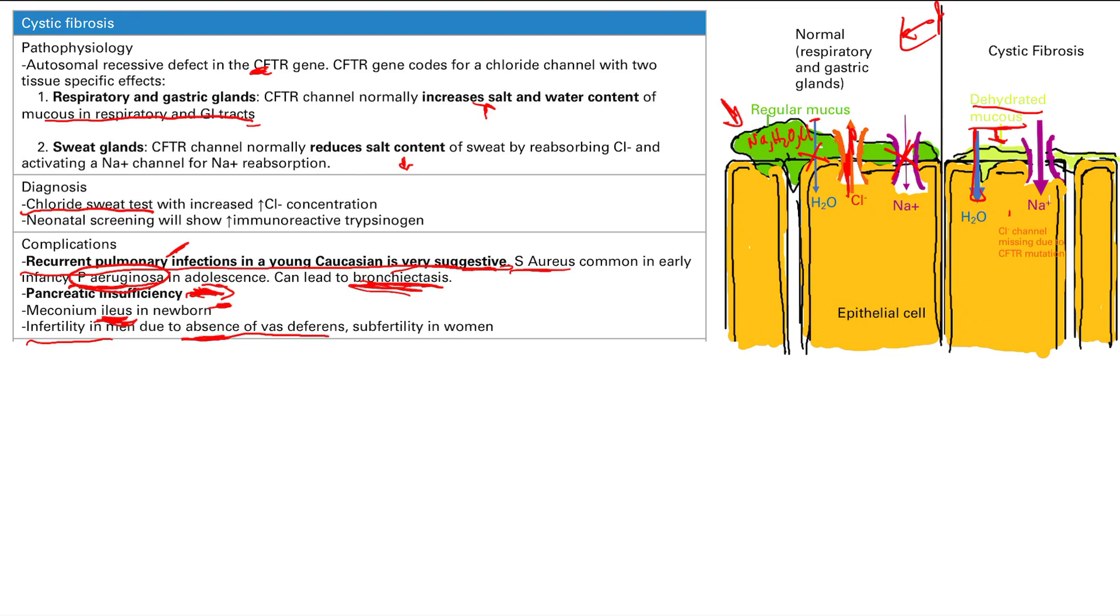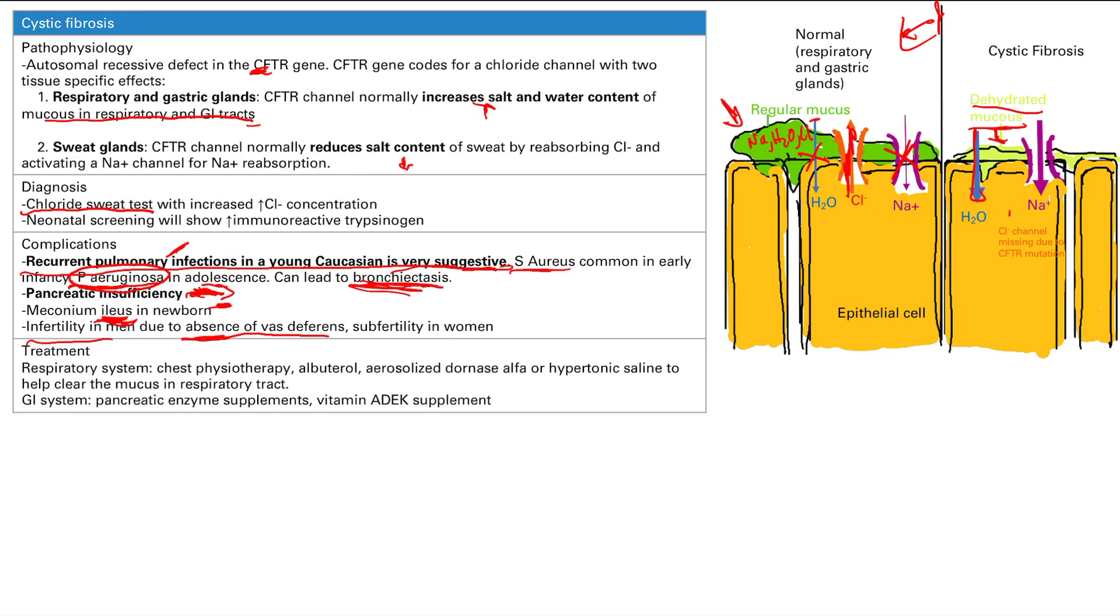The way we treat this is we hit the symptoms. This is a very multidisciplinary treatment. There's so many teams involved in treating this. Basically you treat the respiratory system. You do chest physiotherapy, helps loosen the mucus. Albuterol dilates the bronchioles, or aerosolized dornase alpha or hypertonic saline. These both help clear the mucus, they reduce the viscosity of the mucus and help you clear it from the respiratory tract.